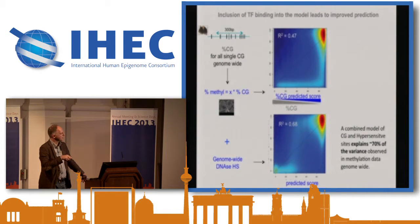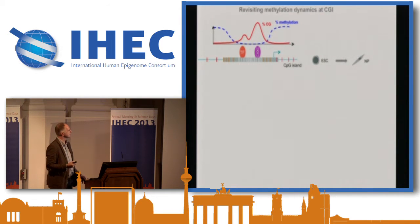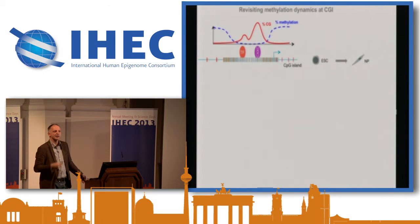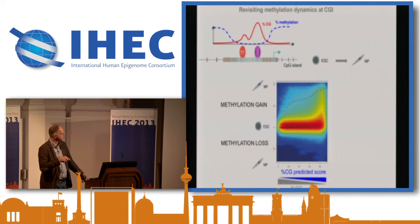If we now incorporate DNase-1 hypersensitivity as a proxy of transcription factor binding, our predictability goes way up — we can explain 70% of the variance by combining a CG density model plus occurrence of TF binding sites, particularly getting better at correctly predicting the unmethylated state. So if it's true that within islands a large contribution of the methylation state is coming from transcription factor binding sites, this would argue that we should also see differences between cell types. Obviously many islands drive housekeeping genes on in each cell type, so you expect similar occupation there. But it would predict that if you differentiate ES cells to neurons, you would observe changes in methylation also within islands — and that's the case.